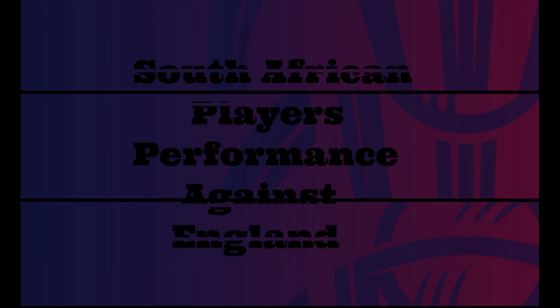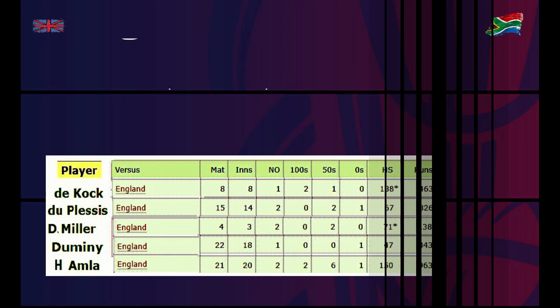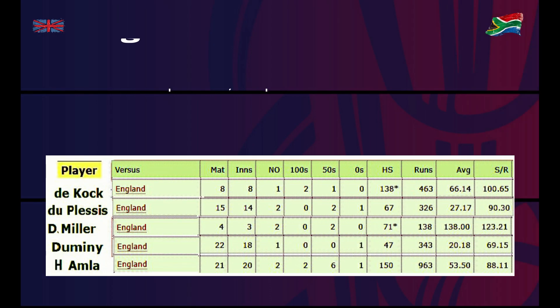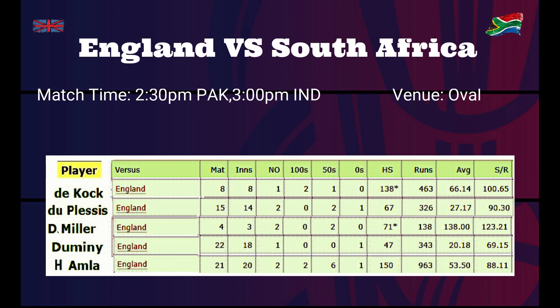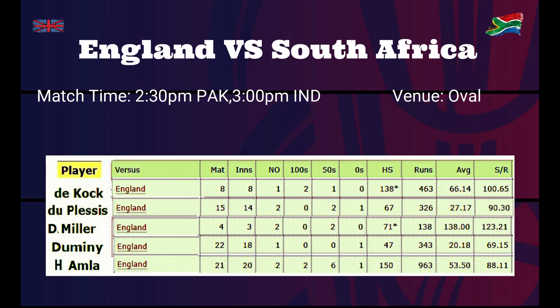Looking at South African players' performance against England, JP Duminy played the most — 22 matches — against England among all current South African team players, and Hashim Amla played 21 matches with an average of 50-plus against England. Though lately he is out of form, he is a class player and scored 50 in the last warm-up match as well, so he can be a key player for South Africa tomorrow.